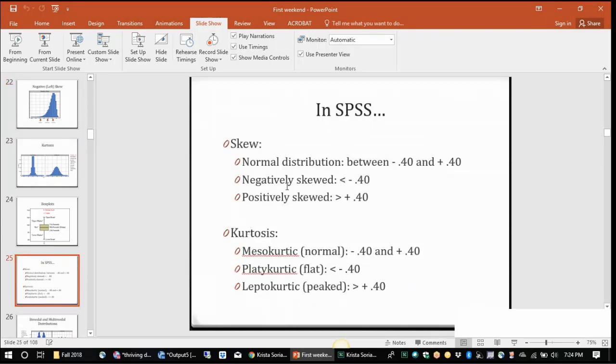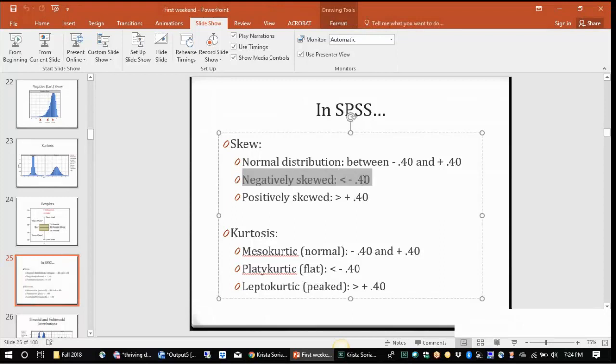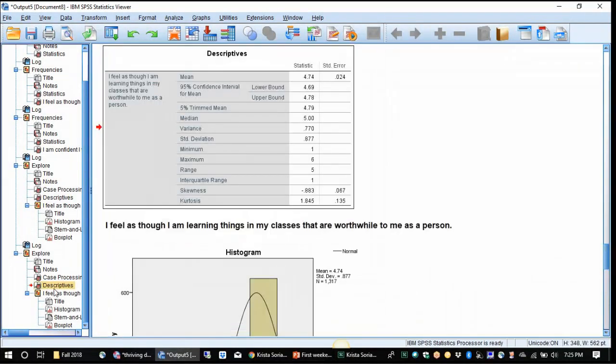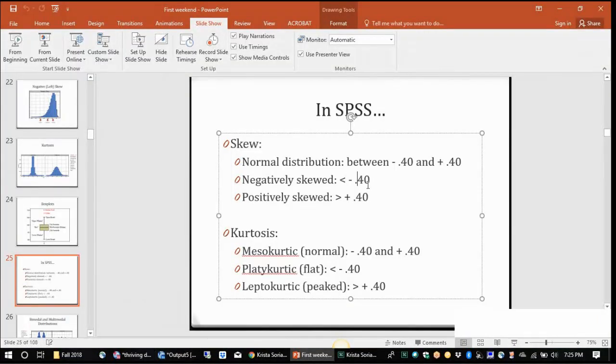But additionally, we have some statistics to help us out. So if a set of data, a distribution is negatively skewed, it's less than negative 0.40. So going back up to our descriptives, our skew is negative 0.883. So yeah, that's less than negative 0.40. So it's definitely negatively skewed.